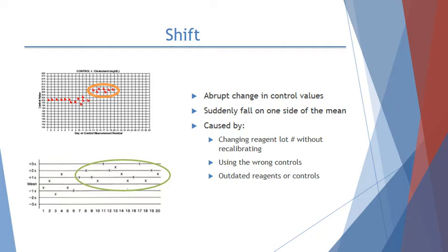A shift is an abrupt change in control values where they suddenly fall on one side of the mean — either all above or all below. This can be caused by changing the reagent lot number without recalibrating, using the wrong controls, or using outdated reagents or controls. The images show examples of shifts, with all circled values falling above the mean.